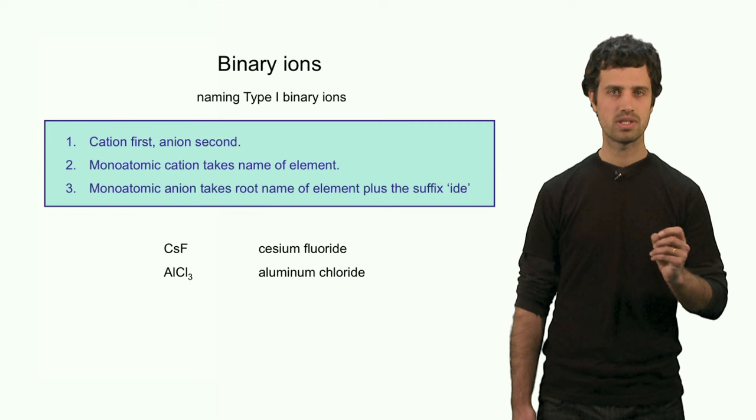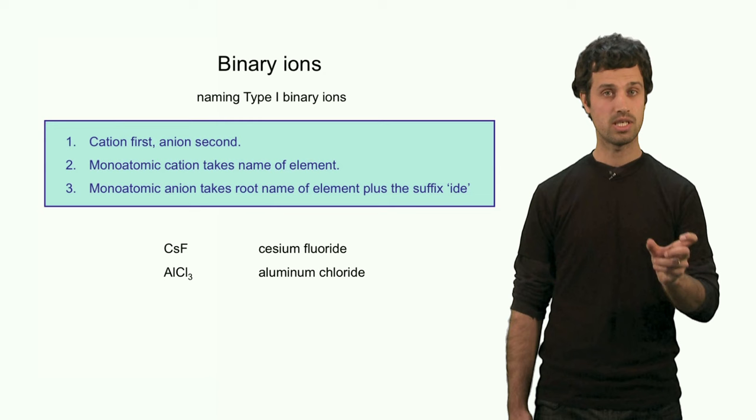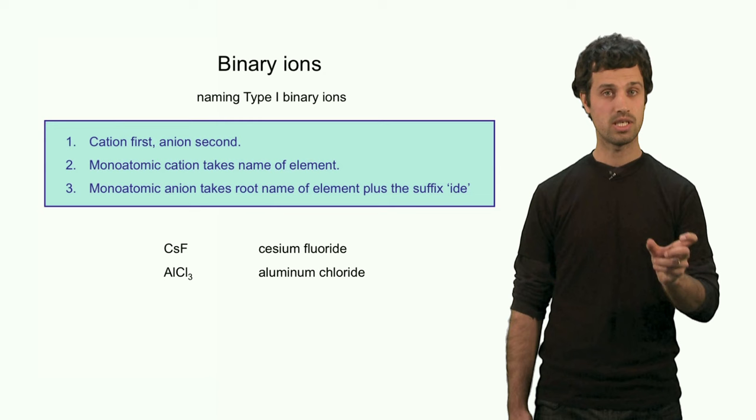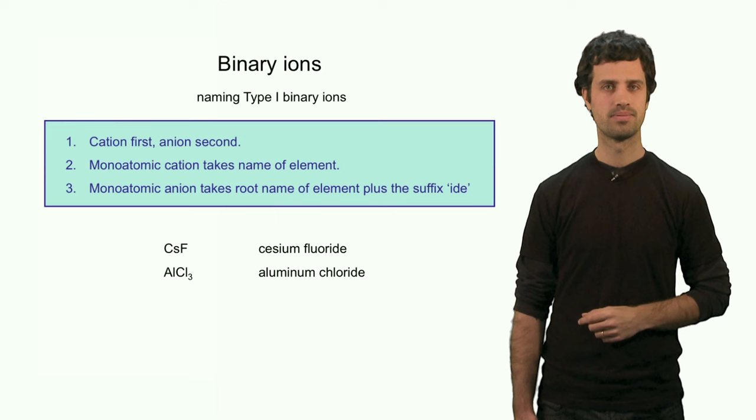That means that a compound composed of cesium and fluorine becomes cesium fluoride. Cesium first, the fluorine, the anion second, with the suffix '-ide'.